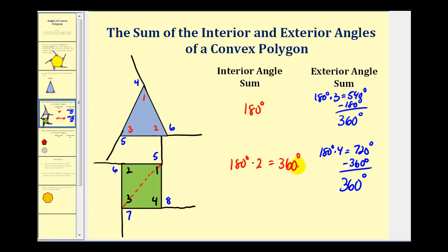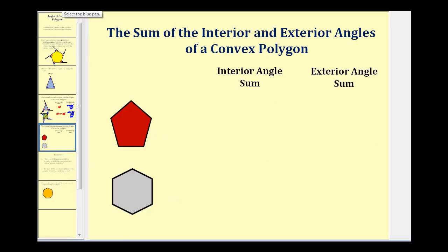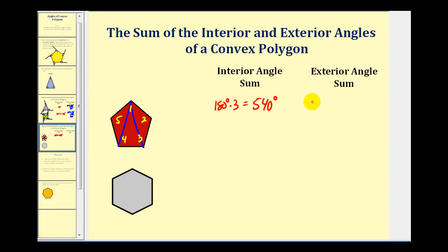Notice how the sum of the interior angles is changing, but the sum of the exterior angles is staying the same. For the pentagon, we can divide the interior into three triangles. Therefore, the sum of the interior angles would be 180 degrees times three, or 540 degrees. And if there are five interior angles, there would be five exterior angles — five linear pairs — so the sum of the interior and exterior angles would be 180 times five, or 900 degrees. Subtracting out 540 degrees leaves us with 360 degrees for the exterior angles.